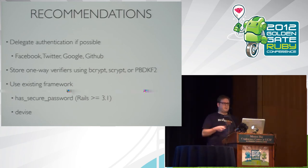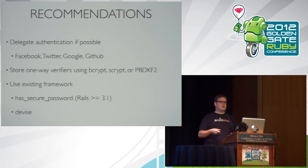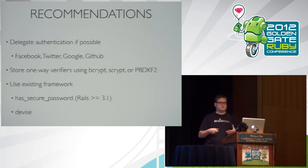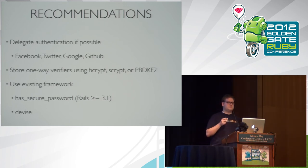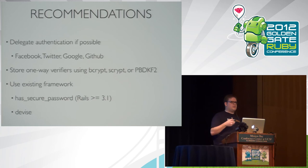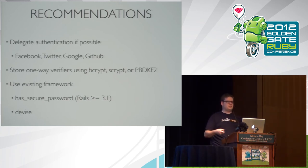If you're going to store a one-way verifier, use bcrypt, scrypt, or PBKDF2. The really easy way to do that is to use an existing framework. Since Rails 3.1 we've had has_secure_password, which is great — it uses bcrypt and does everything for you. We also have Devise, which by default also uses bcrypt. Make sure you calibrate the number of iterations to tune exactly how slow you want it to be. bcrypt and scrypt are native extensions, and if that's an issue on your platform, PBKDF2 has a pure Ruby gem.